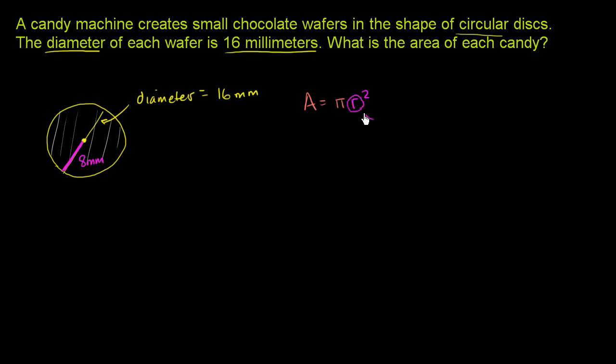So where we see the radius, we could put 8 millimeters. So the area is going to be equal to pi times 8 millimeters squared, which would be 64 square millimeters.